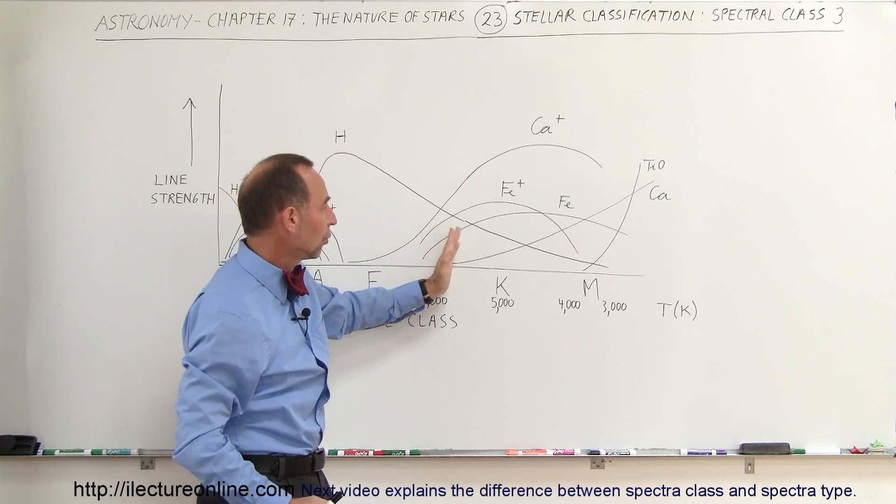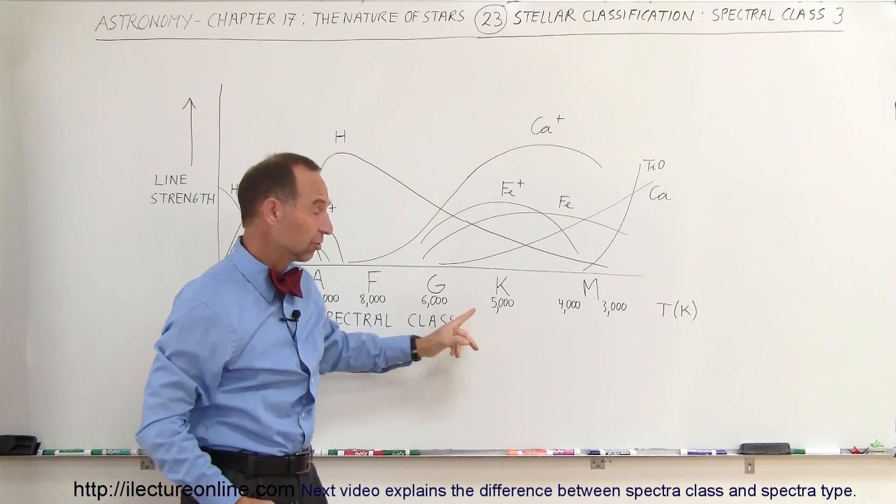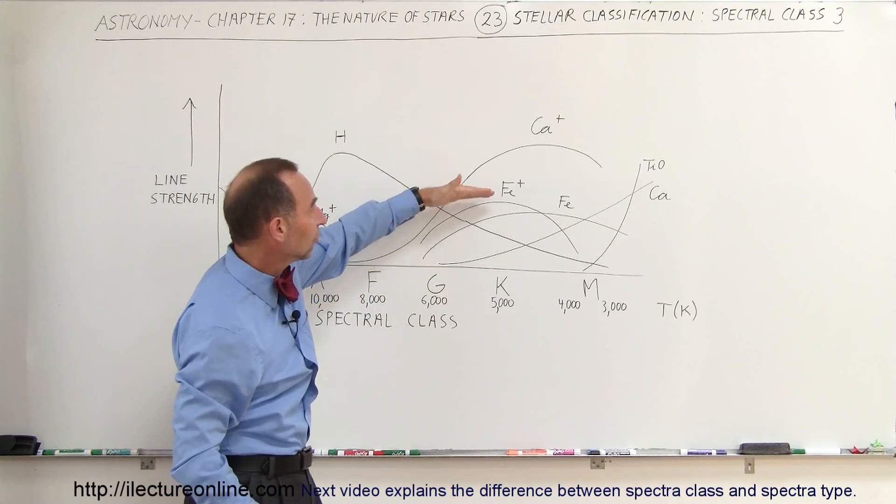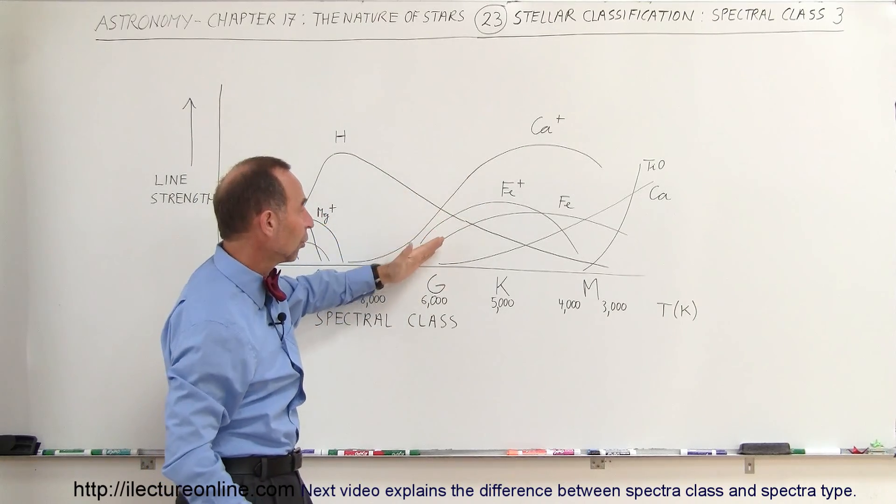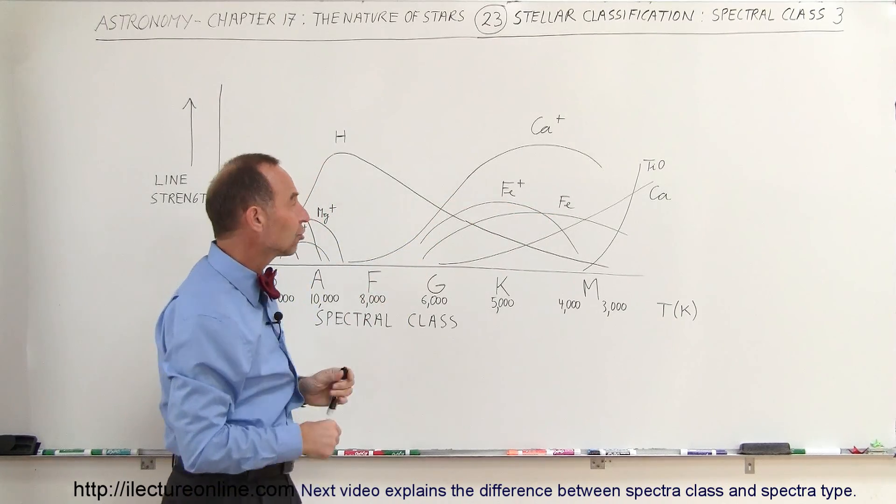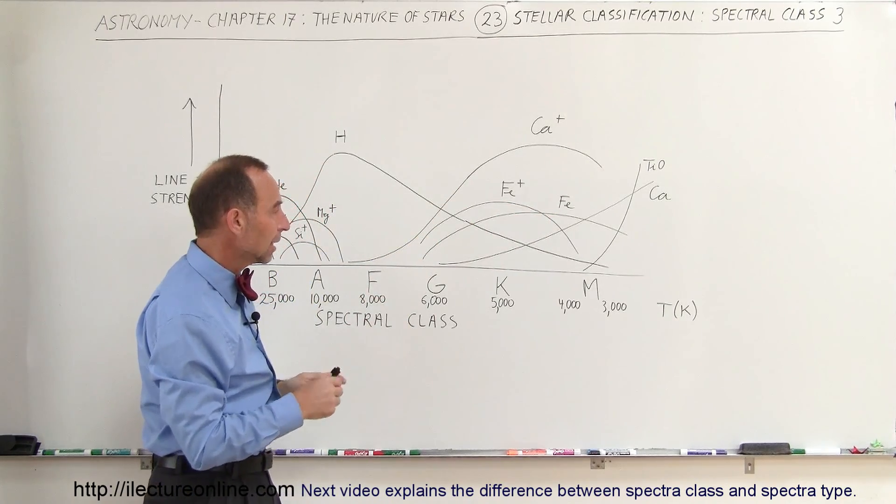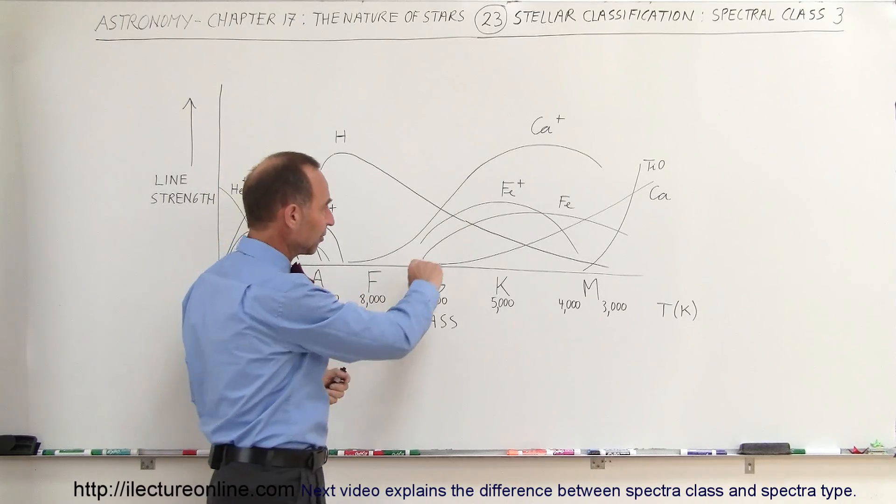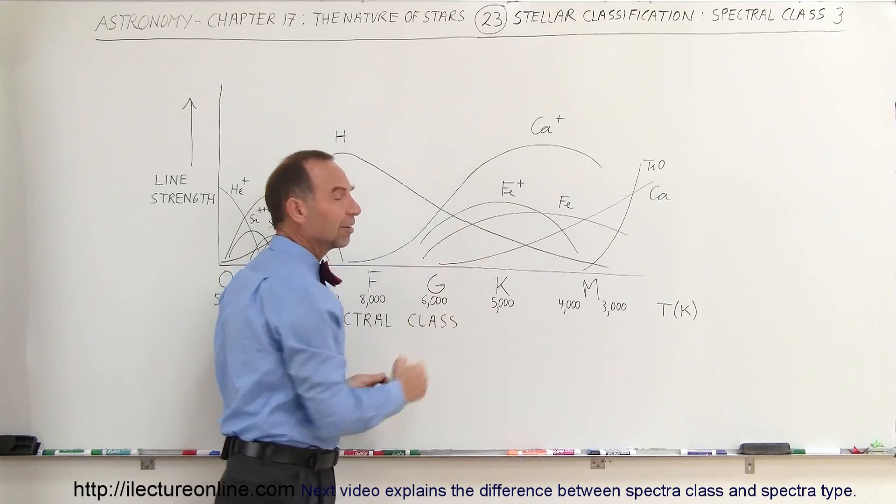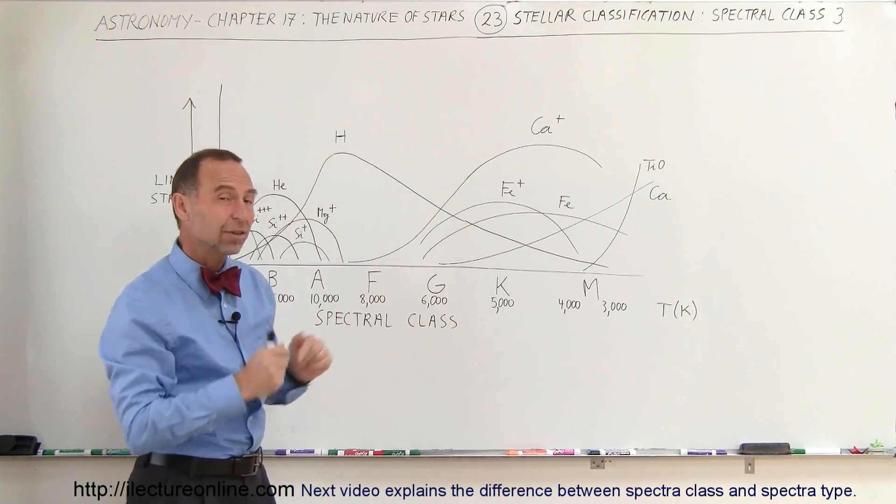If you continue to go to the right and get to cooler class stars, like the G and K-class stars, notice that the iron plus one, where one electron is missing, or neutral iron, become more prominent in the line structure of the spectrum that we get from the stars. By measuring the relative strength of these lines, we can then determine what class star we're looking at.